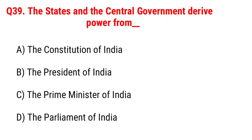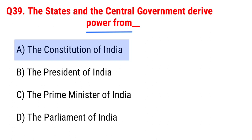Next question: the states and the central government derive power from Option A, the Constitution of India; B, the President of India; C, the Prime Minister of India; D, the Parliament of India. The right answer is Option A, the Constitution of India.